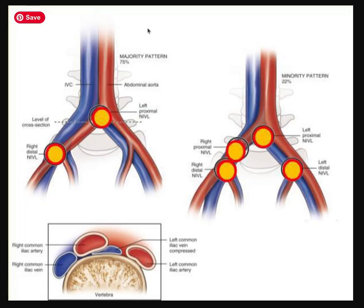Here I have a picture of the vasculature close to the heart, with your heart being up here. Bringing blood flow back to the heart is your IVC, which is short for inferior vena cava. That branches off into the left common iliac vein and the right common iliac vein. Bringing blood away from the heart is your aorta, which branches off into the left common iliac artery and the right common iliac artery.